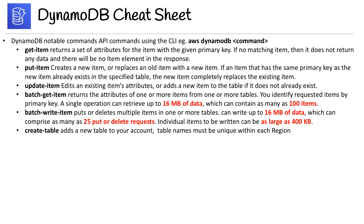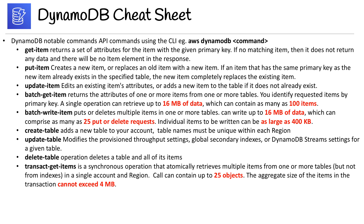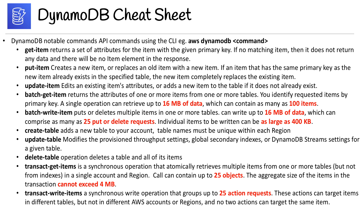CreateTable adds a new table to your account — table names must be unique within each region, but you can have the same table name in two different regions. UpdateTable modifies the provisioned throughput settings, global secondary indexes, or DynamoDB stream settings for a given table. DeleteTable deletes a table along with all of its items. TransactGetItems is a synchronous operation that atomically retrieves multiple items from one or more tables (not from indexes) in a single account and region — can contain up to 25 objects, with an aggregate size not exceeding 4 megabytes. TransactWriteItems is a synchronous write operation that groups up to 25 action requests; actions can target items in different tables but not different AWS accounts or regions, and no two actions can target the same item.